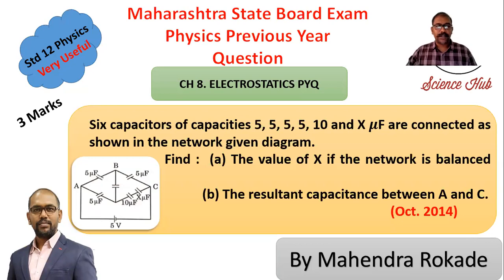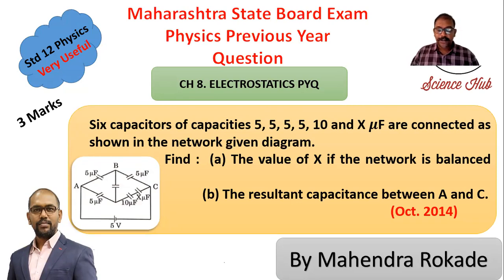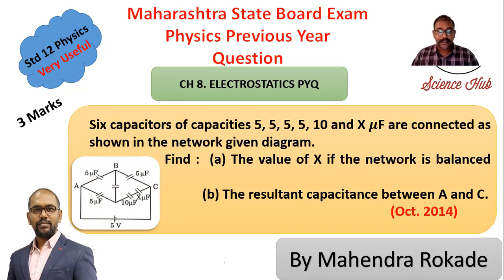This is a board question from chapter electricity. Six capacitors of capacities 5, 5, 5, 10, and x microfarad are connected as shown in the network. We have to find the value of x if the network is balanced, and also find the resultant capacitance between A and C.